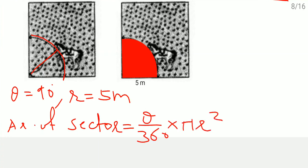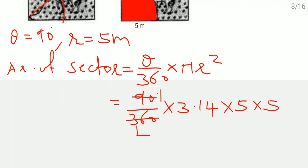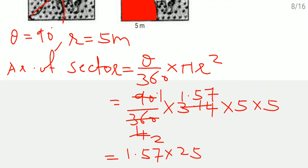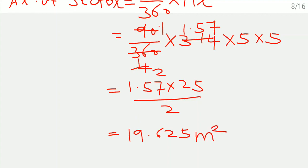Substituting: 90 by 360 into 3.14 into 5 squared. After cancellation: 1.57 into 25 divided by 2, which finally gives 19.625 meter square. This is the area available for the horse to graze.